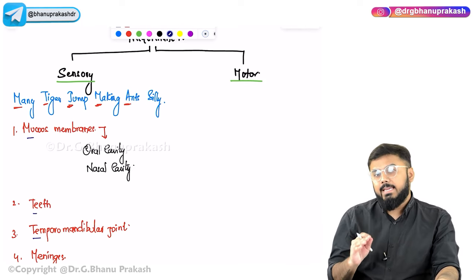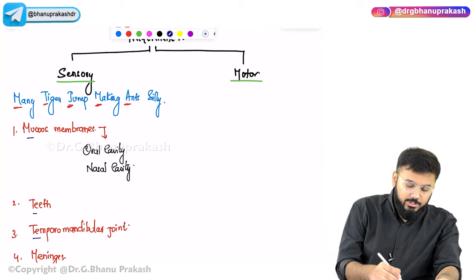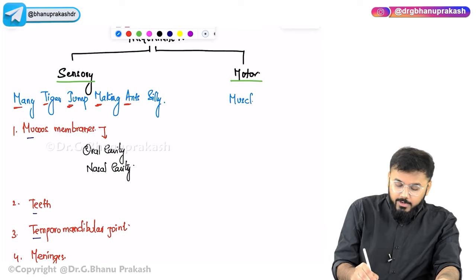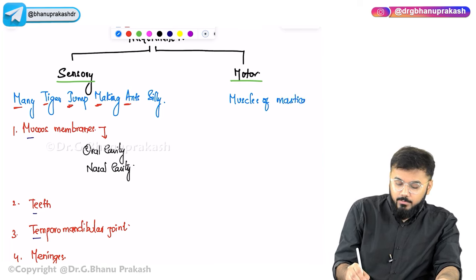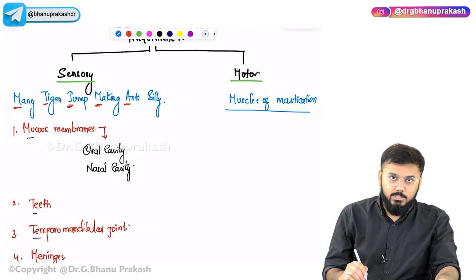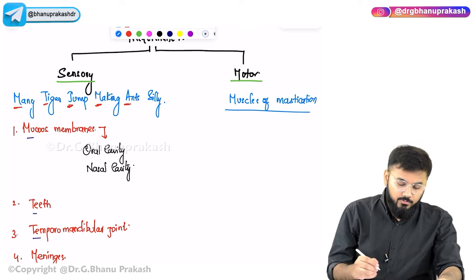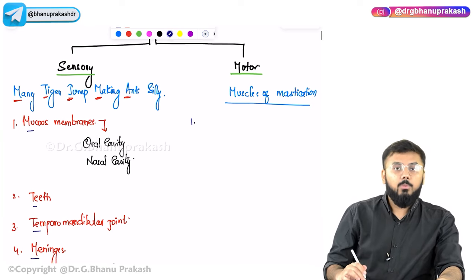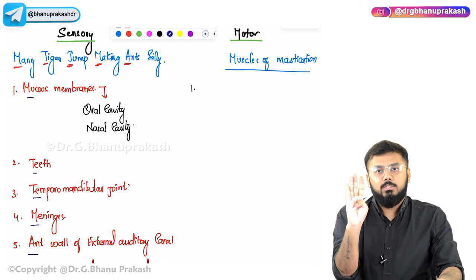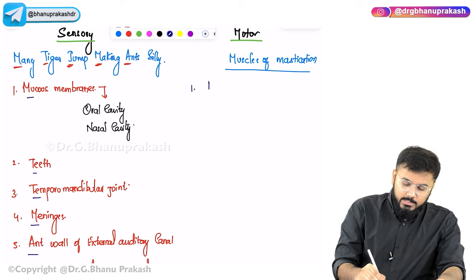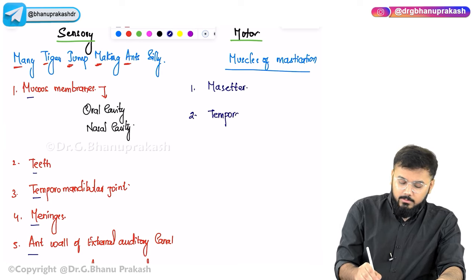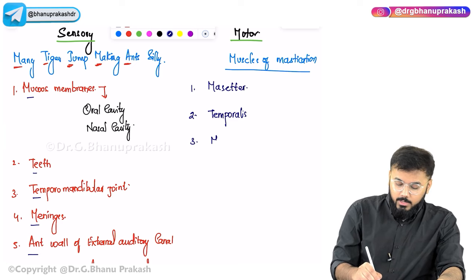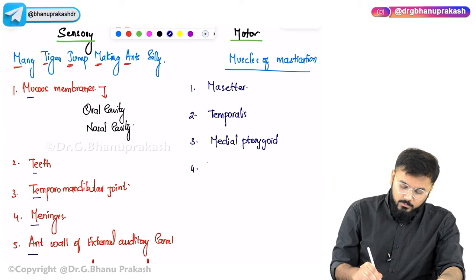For motor functions, CN V innervates the muscles of mastication: masseter, temporalis, medial pterygoid, and lateral pterygoid. Medial pterygoid closes the jaw; lateral pterygoid opens the jaw. The masseter is responsible for the jaw jerk reflex.